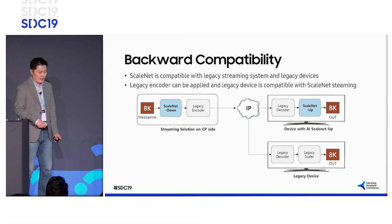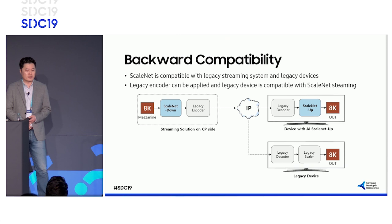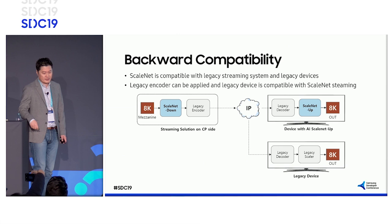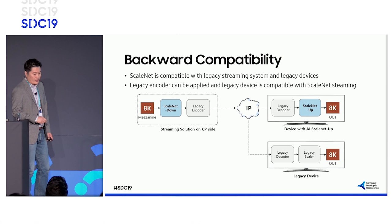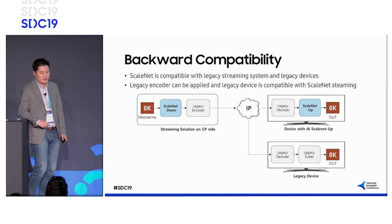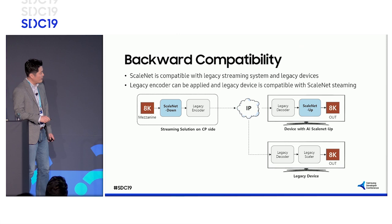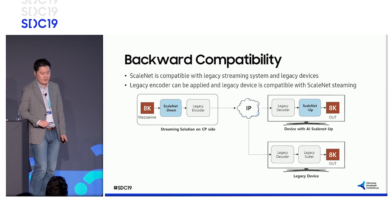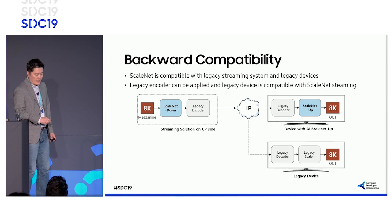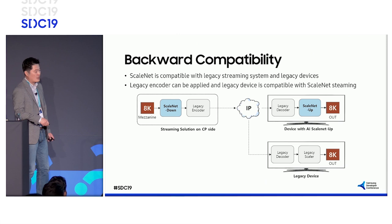One more thing: ScaleNet supports backward compatibility. On the content provider side, those providing streaming solutions do not need to replace their legacy encoding system. The only thing they have to do is put ScaleNet Down prior to the legacy encoder, replacing the legacy scaler. On the device side, you can enjoy OTT video as before even if your device doesn't have ScaleNet — it means there is no damage, no harm. However, if you have ScaleNet Up in your device, you can enjoy one more level of visual quality.